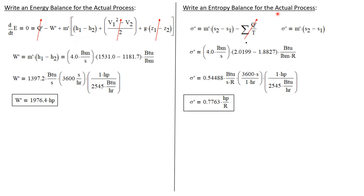Now let's write an entropy balance for the actual turbine process. The rate of entropy production can be written as the mass flow rate times the change in specific entropy minus the summation of Q-dot over T. Since this is an adiabatic process, that summation term is zero, and we get that the rate of entropy production equals m-dot times (S2 minus S1). These values were given in the input table: m-dot is 4 lbm/s, S2 is 2.0199, and S1 is 1.8827 BTU/(lbm·°R).